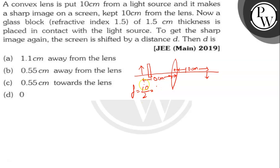Shift in object due to glass block: t times (1 - 1/μ). T is the thickness 1.5 and μ is 1.5, so 1.5 times (1 - 1/1.5) = 1.5 times 0.5 = 0.5. New object distance: